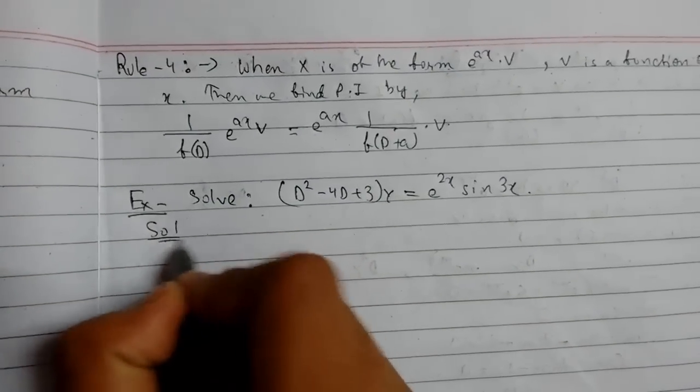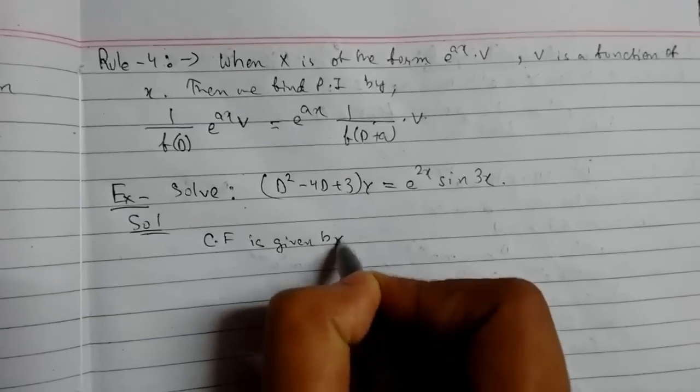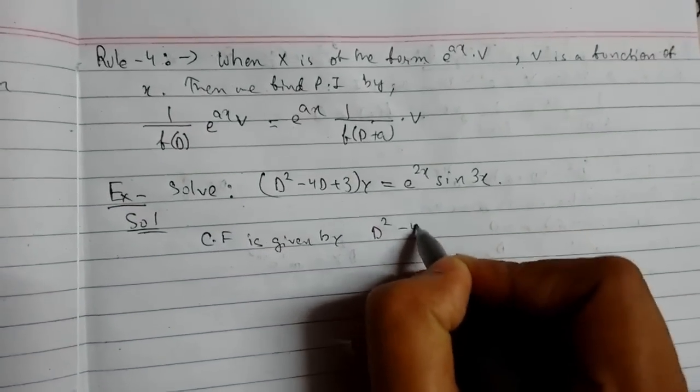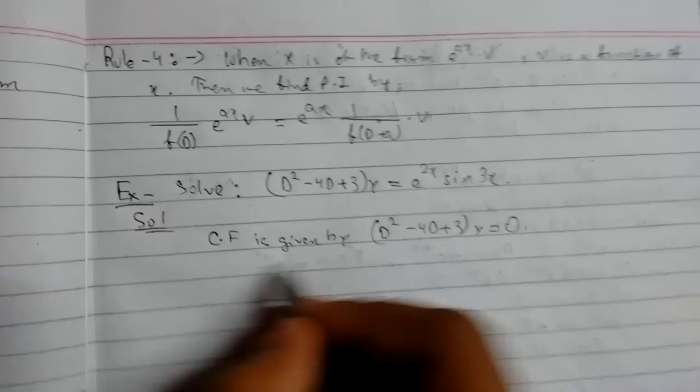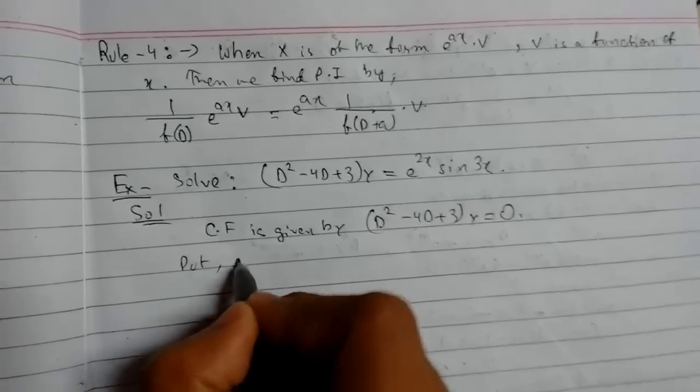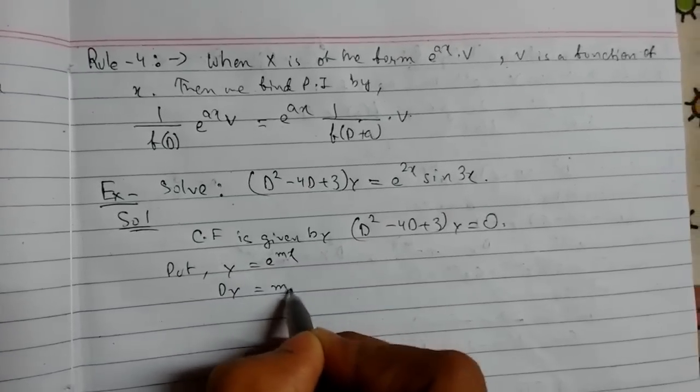Solution. First we will find the CF, given by the corresponding homogeneous equation. This will be equal to 0. Now put y = e^(mx), Dy = me^(mx).